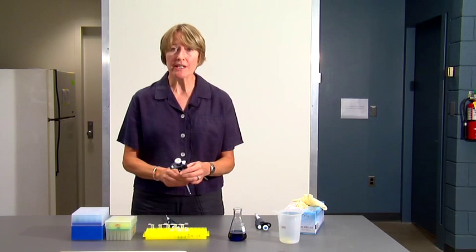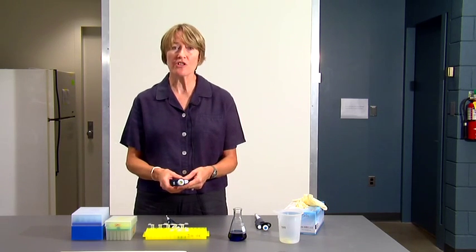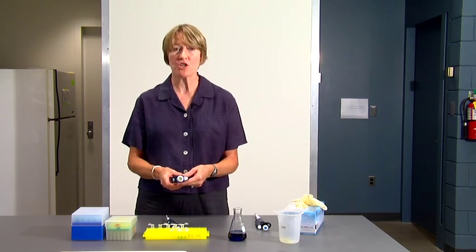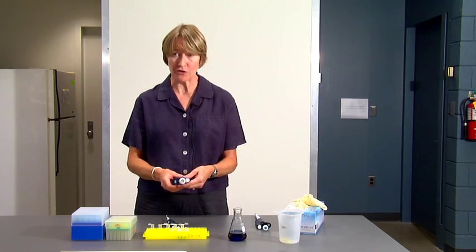We'll also be using a P200. Again, P200 is listed on the top of the plunger. P200s are used for measuring 20 microliters to 200 microliters of fluid.